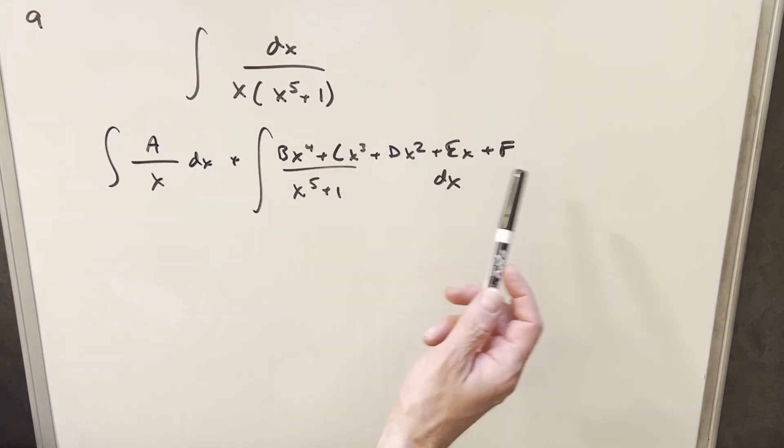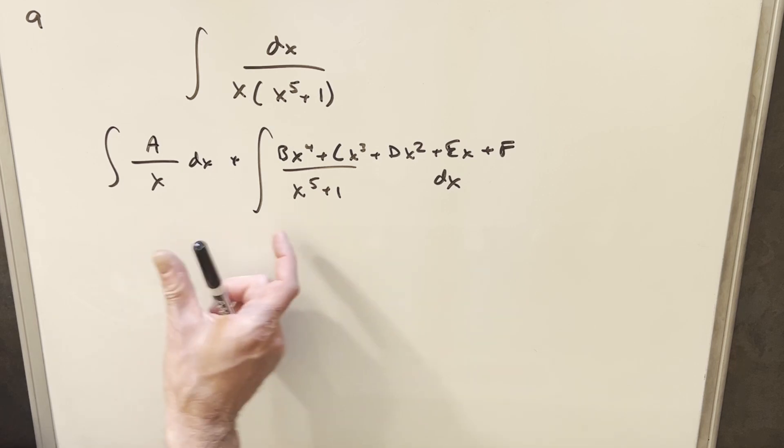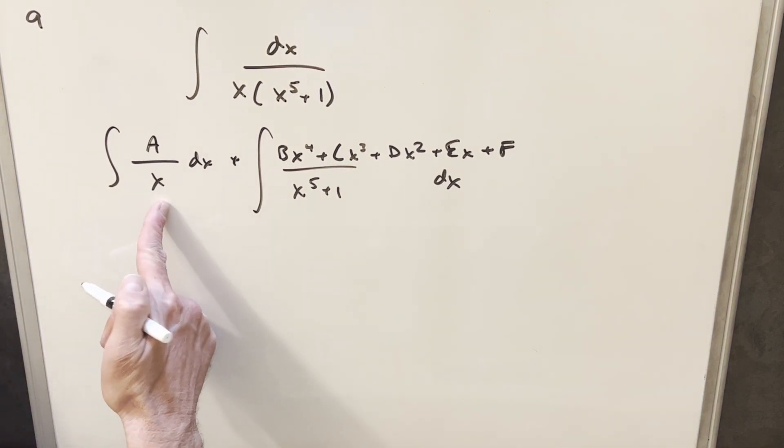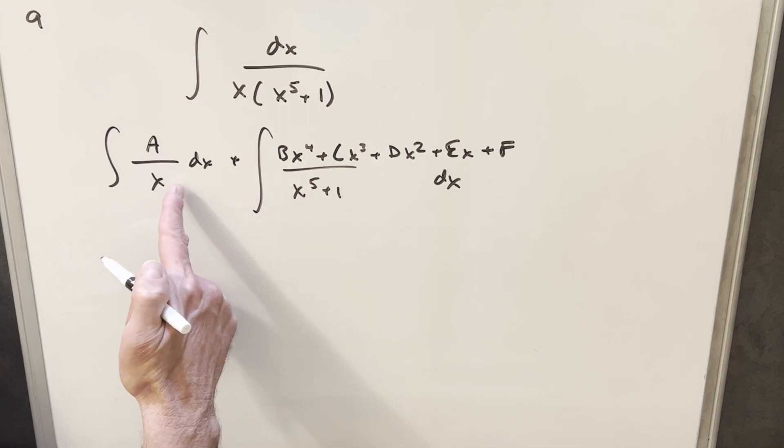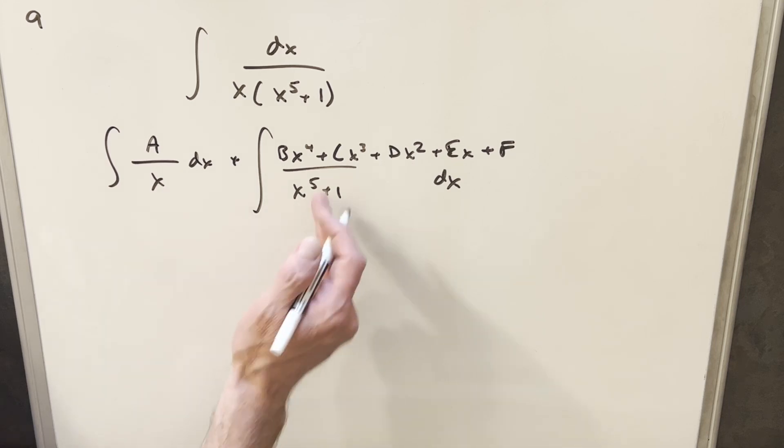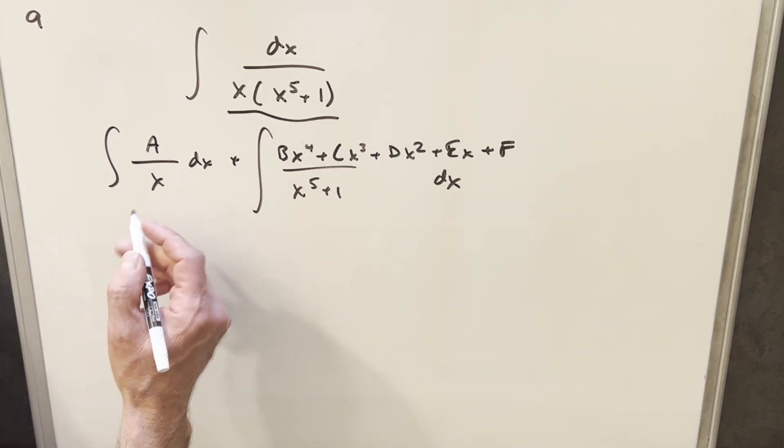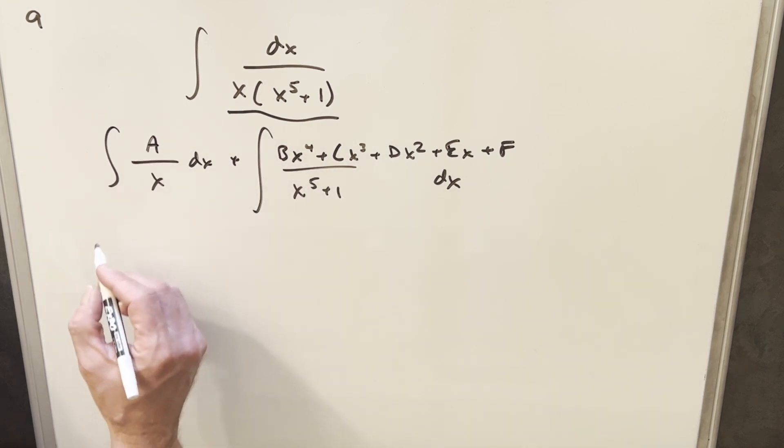And then from here, we want to just solve for all these constants, A through F. And what we'll do is now we'll essentially get our common denominator. And so to get our common denominator for this first term, we're going to have to multiply it top and bottom by x to the fifth plus one. But we won't worry about the denominator because we already know what it is. Our denominator is going to be this, so we don't have to account for that. We're solving completely in the numerator. So we'll multiply x to the fifth plus one times A, we'll have Ax to the fifth plus A.